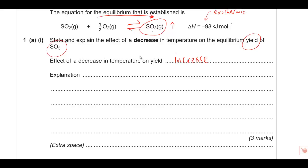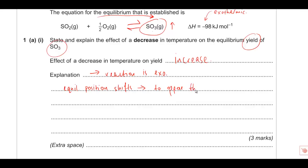For the explanation, the forward reaction is exothermic, and the equilibrium position shifts right. This next part is incredibly important and comes up in every equilibrium question: you must include the phrase 'to oppose the decrease in temperature', or whatever the change is - increase in pressure, etc. Fit that phrase to the question. Every single equilibrium question has this key end part.